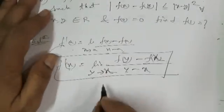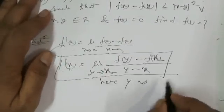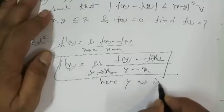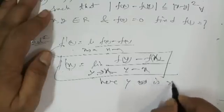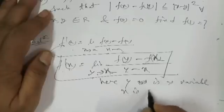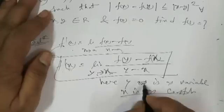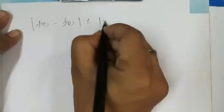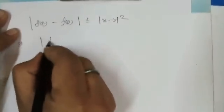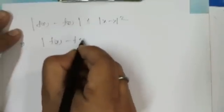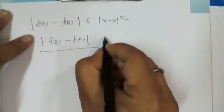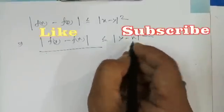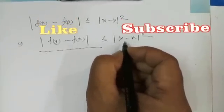Therefore, from the given condition |f(x) - f(y)| ≤ |x - y|², this implies |f(y) - f(x)| / |y - x| ≤ |y - x|, because |x - y| = |y - x| by the modulus property. So modulus of [f(y) - f(x)] / (y - x) is less than or equal to |y - x|.